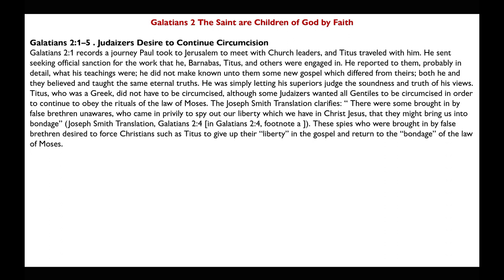Titus, who was a Greek, did not have to be circumcised, although some Judaizers wanted all Gentiles to be circumcised to continue obeying the rituals of the law of Moses. The Joseph Smith Translation clarifies: 'There were some brought in by false brethren unawares who came in privately to spy out our liberty, which we have in Christ Jesus, that they might bring us into bondage.' These spies desired to force Christians such as Titus to give up their liberty in the gospel and return to the bondage of the law of Moses — just as some in the church today cannot let go of certain traditions.